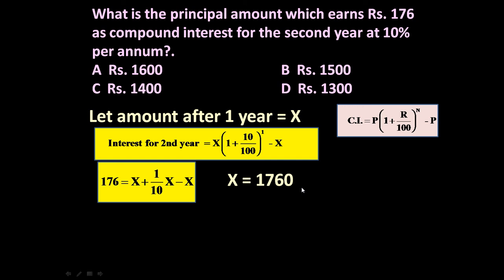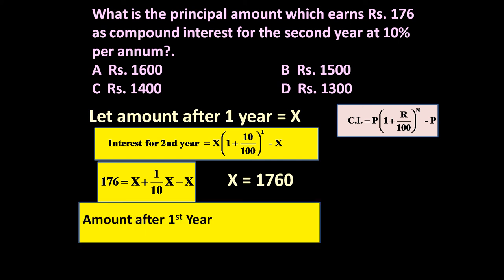But before one year, initially how much amount was invested? That we have to determine. So for that again, let us use the same formula. Amount after one year is equal to X is equal to P, because this is the amount that becomes after one year. So how much amount was invested? P into 1 plus R upon 100.